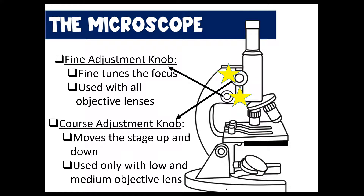On the side of the microscope you have the fine adjustment knob and the coarse adjustment knob. Their locations vary depending on the microscope. The fine adjustment knob is usually the smaller of the two, and its purpose is to fine-tune the focus — you can use it to crisp up the image, and it can be used with all objective lenses. The coarse adjustment knob is usually the larger of the two. You can turn it to move the stage up and down to make the image visible as you look through the eyepiece.